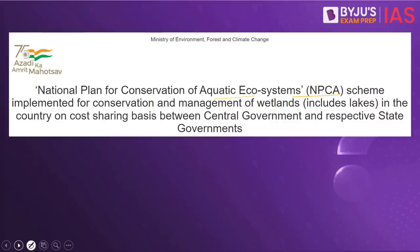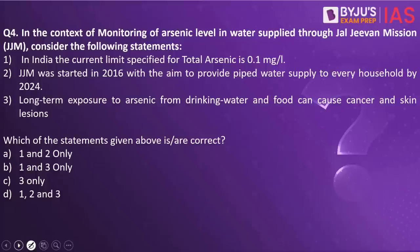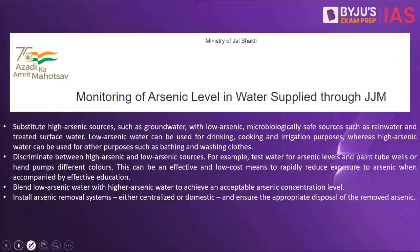Now let's look at the next practice question. In the context of monitoring of arsenic level in water supplied through Jal Jeevan Mission, consider the following statements. In India, the current limit specified for total arsenic is 0.1 mg per litre. JJM was started in 2016 with the aim to provide pipe water supply to every household by 2024. Long-term exposure to arsenic from drinking water and food can cause illness. Which of the statements is correct? The answer is 3 only.